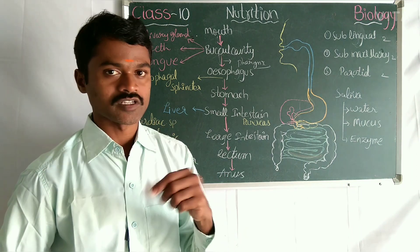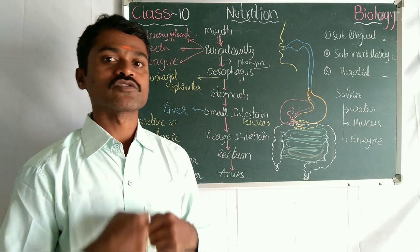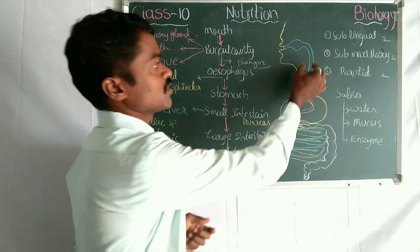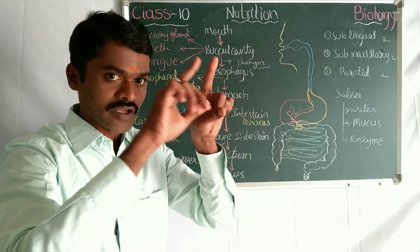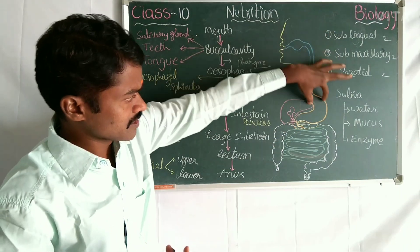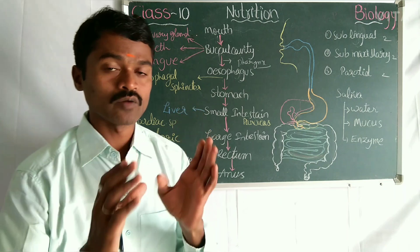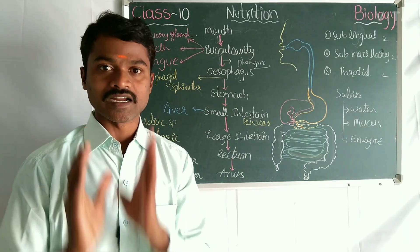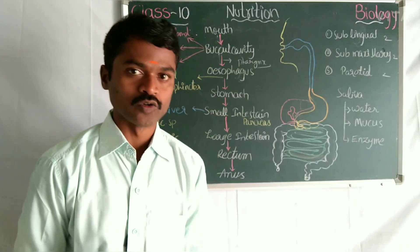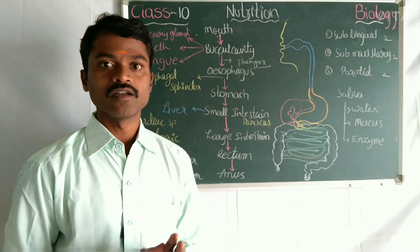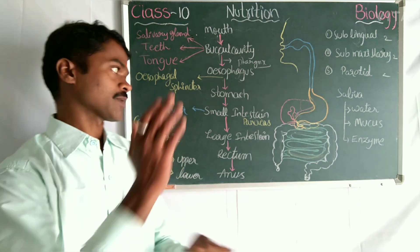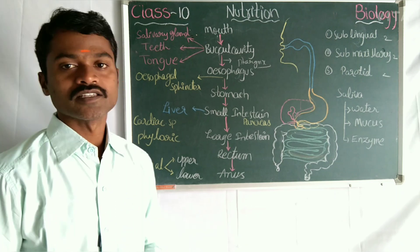Taking food into the digestive system is called ingestion. The food moves into the oesophagus through wave-like movements. These wave-like movements are seen throughout the gut — in the oesophagus, stomach, small intestine, and large intestine — driven by involuntary muscles. These wave-like movements are called peristalsis or peristaltic movements.